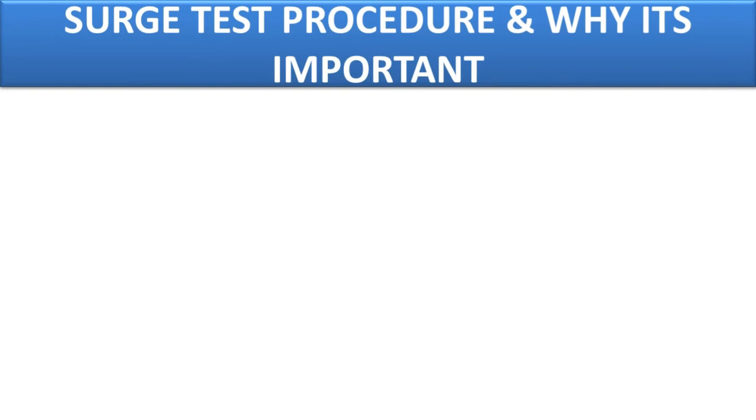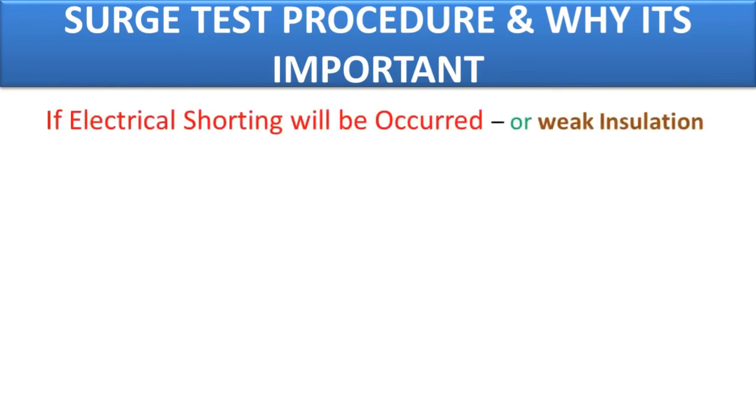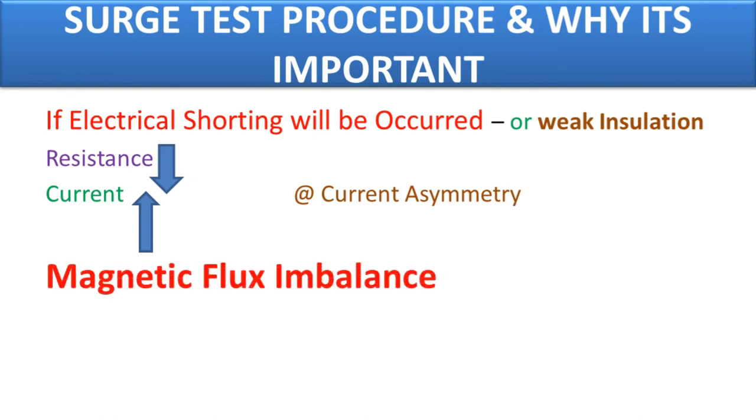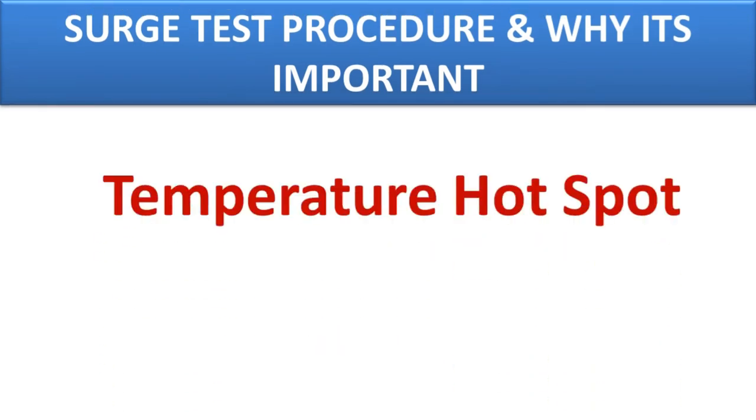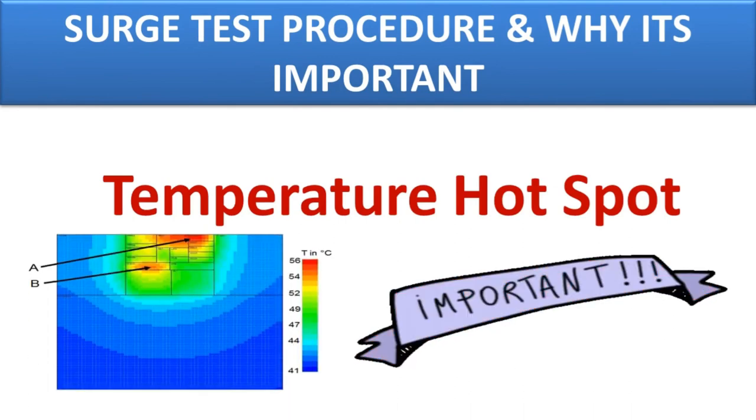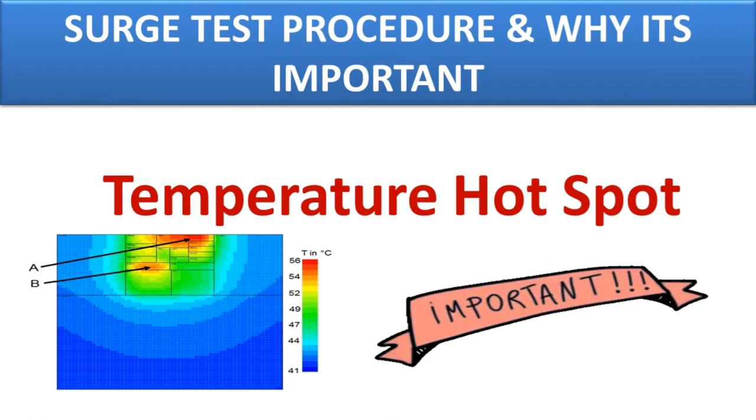Before the discussion of surge test procedure, we shall discuss why surge test is important. If electrical shorting will occur between the conductors of the coil or between the windings and its surrounding, then the resistance will be decreased, so more current will be drawn from the source to coil. That is why current asymmetry will occur among different coils, which is not good for the motor. Due to this, magnetic flux imbalance will occur, which will affect the efficiency of the motor and transformer. And due to shortness of the conductor, temperature hotspot will come, which is also not good for the motor and transformer health. So, surge test plays a major role in the manufacturing of motor and transformer and its quality improvement.